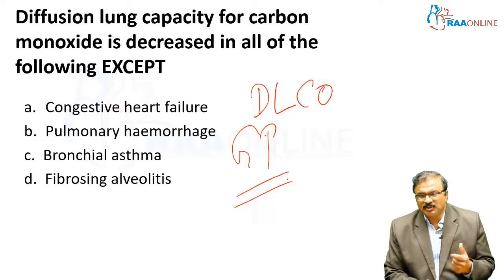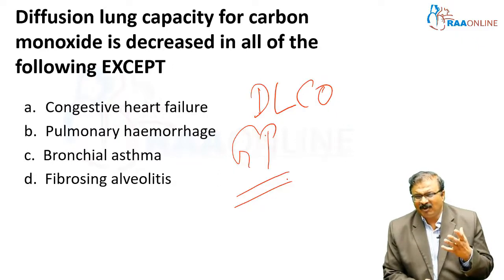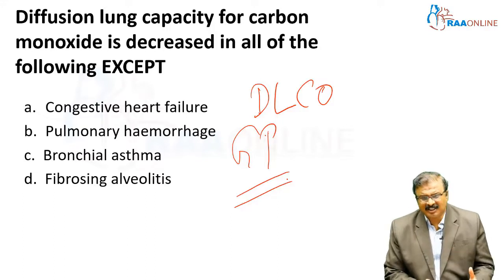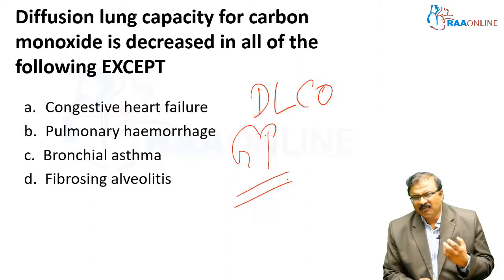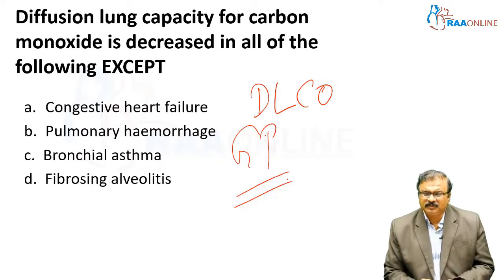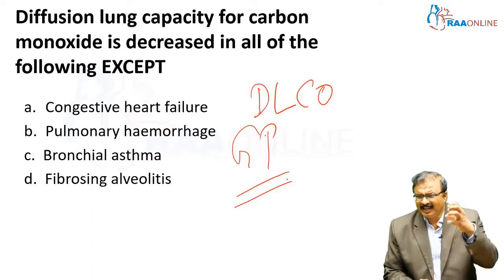Goodpasture's syndrome has a bad prognosis — good pastures, bad prognosis. Other conditions with alveolar hemorrhage are rare, except those involving a component of hemorrhage in various metabolic disorders with iron deposition. These are rare conditions. In all other conditions, DLCO is decreased.